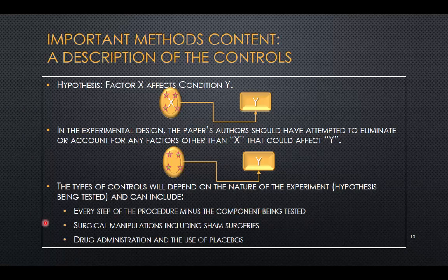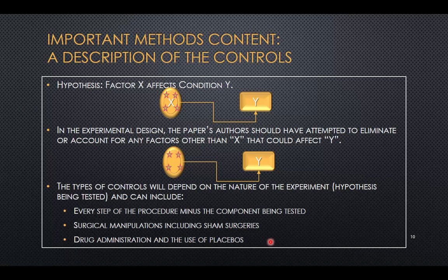In a surgical manipulation, the control may include a sham surgery, where they anesthetize the animal, make the incisions, and do everything except the surgical intervention intended to make a change in the subject, then close the animal up and allow them to recover from anesthesia and surgery just like the animals under test. You're probably more familiar with controls in drug tests because of the use of placebos — essentially a substance given to the test subject that does not contain the active ingredient.